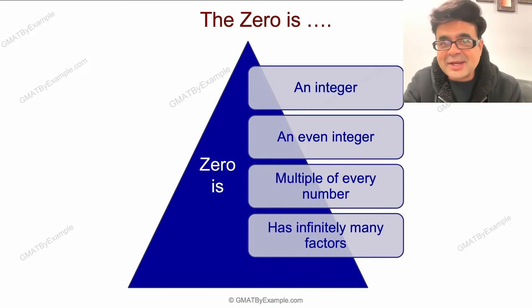Zero is also a multiple of every number because any number multiplied by zero is zero. Zero also has infinitely many factors because any number can divide zero, which means zero divided by any number is zero, except zero itself.